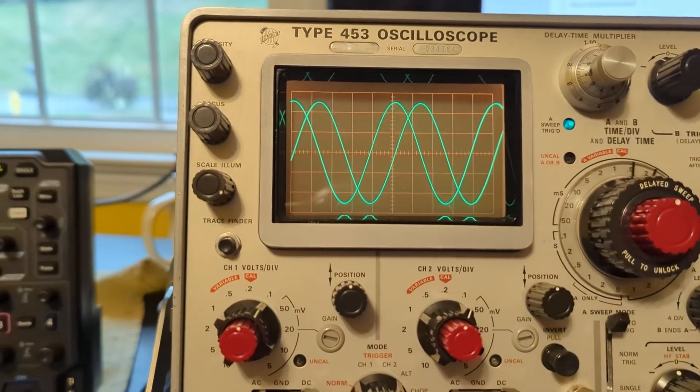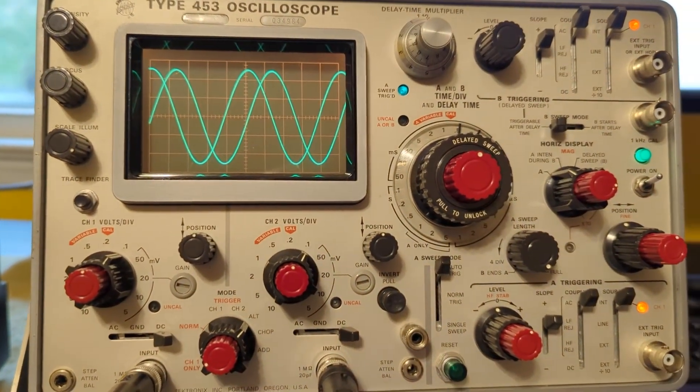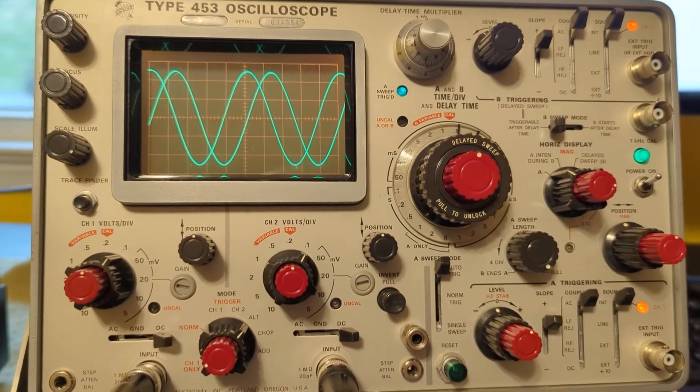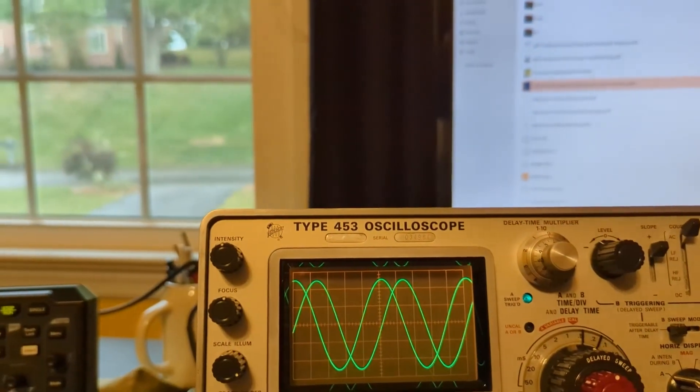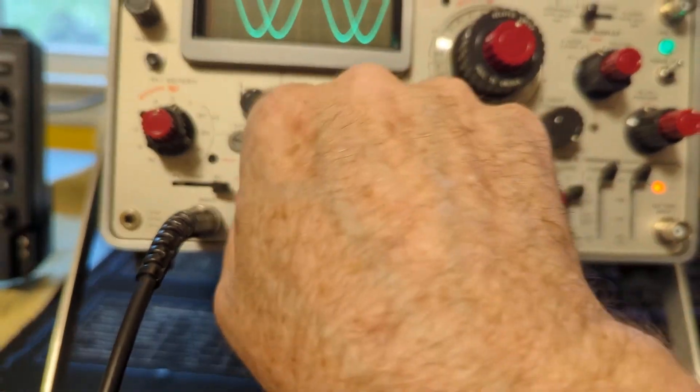So you can see they're sort of 90 degrees out of phase. So to get the XY mode, the first thing we need to do is make sure we've set it to channel one only down here on the trigger.